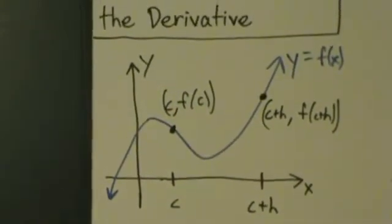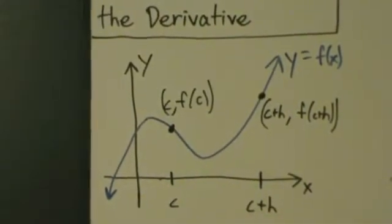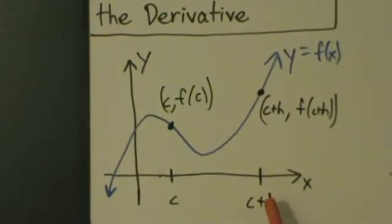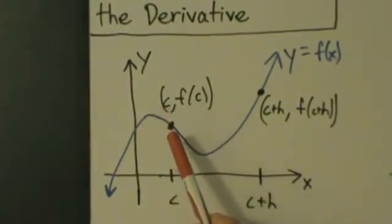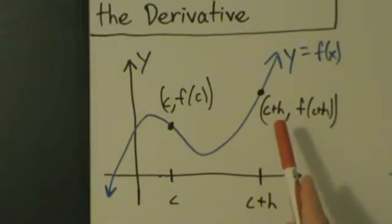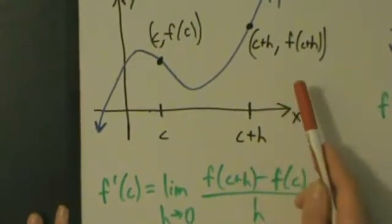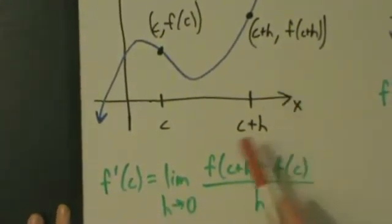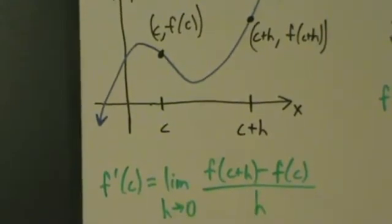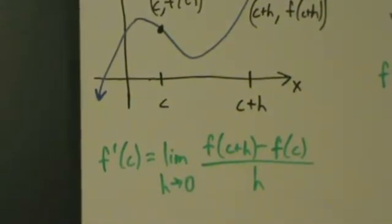A picture of that would look like this. So here's our function y equals f of x, and here's the point where x equals c. We're just going to assume for simplicity that h is positive. So c plus h will be somewhere over here. Here's the point c comma f of c, and here's c plus h comma f of c plus h. If we take the limit as h goes to 0 of this difference quotient, we get the derivative f prime of c.